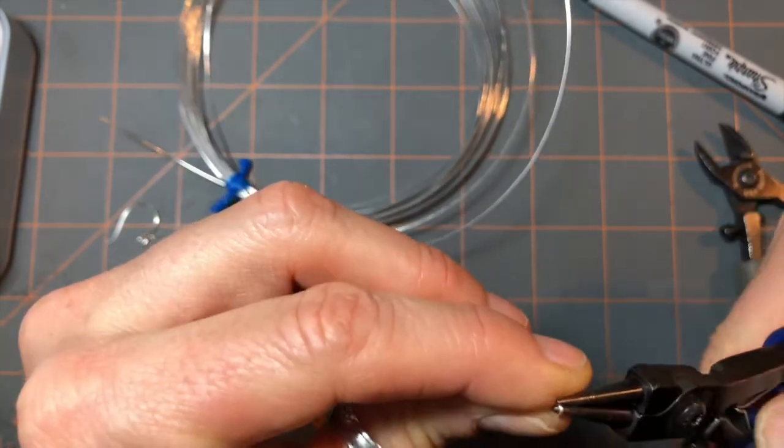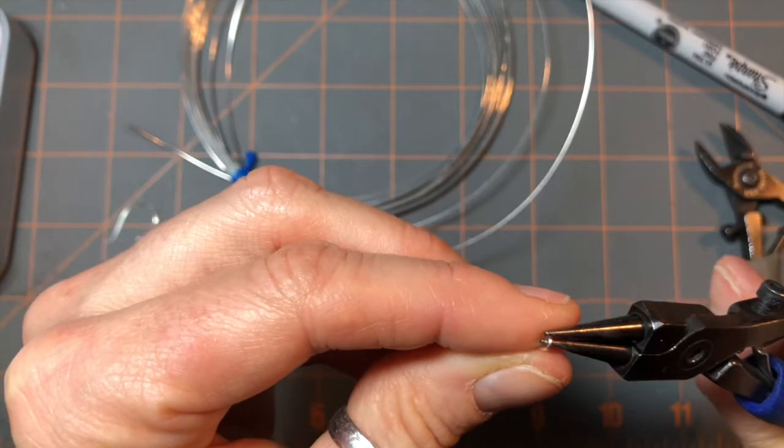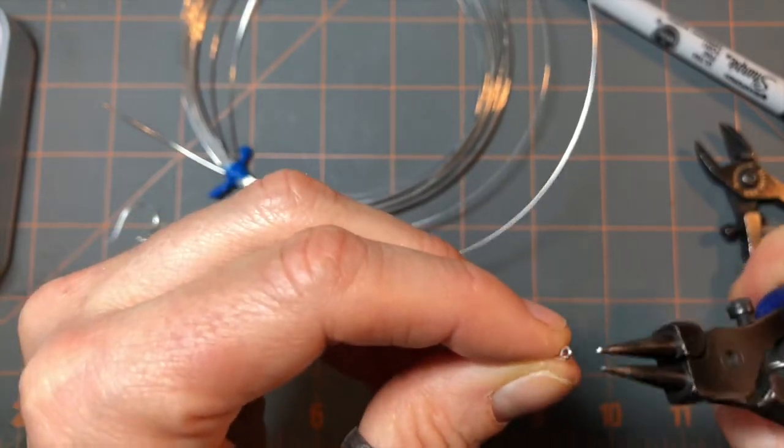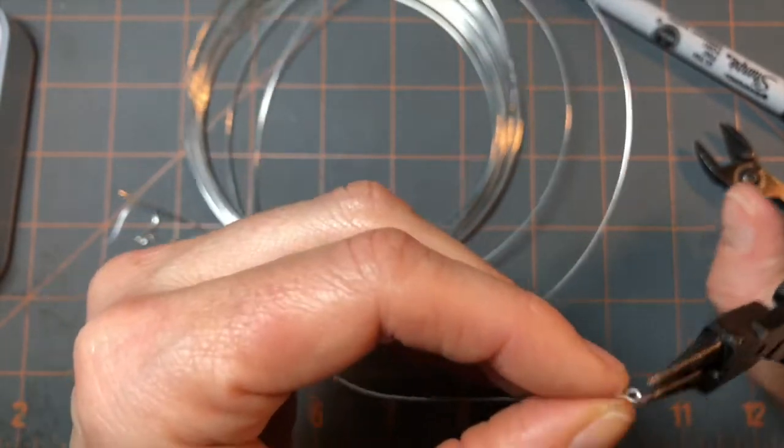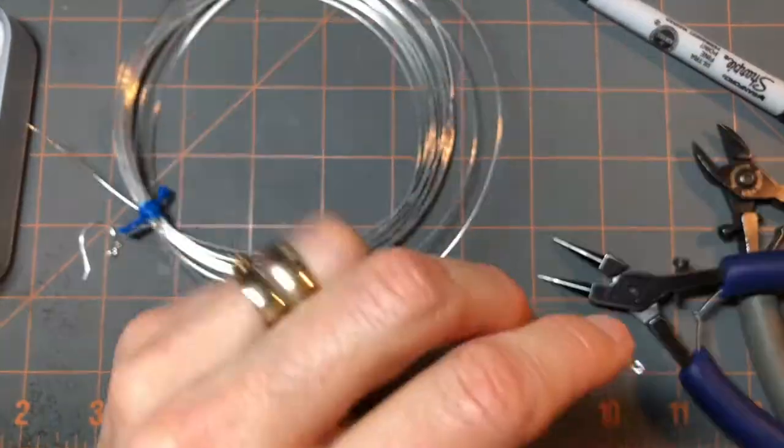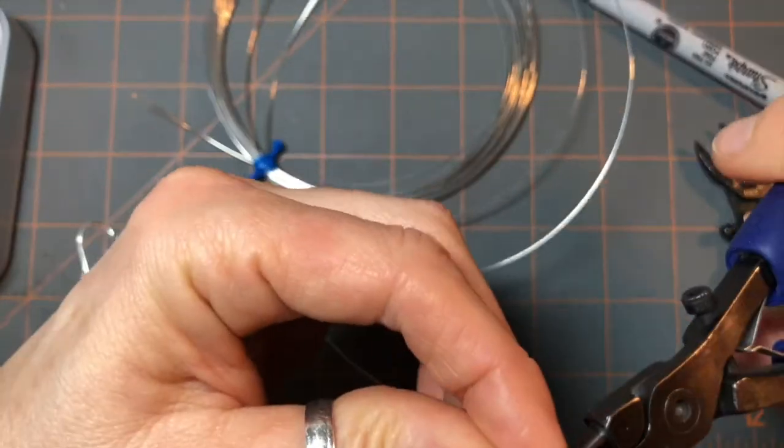Cut the sharp end off. Make your tiny loop. Like that. Straighten it out. Give it a half turn. Make another loop.